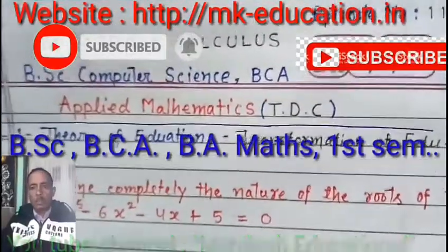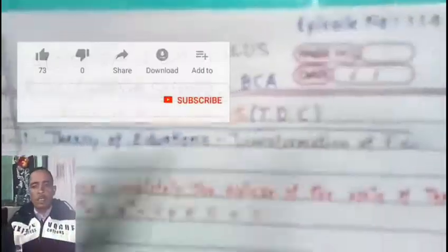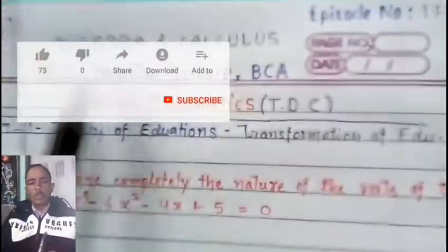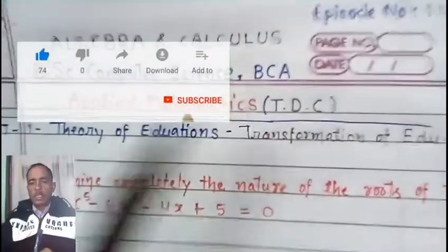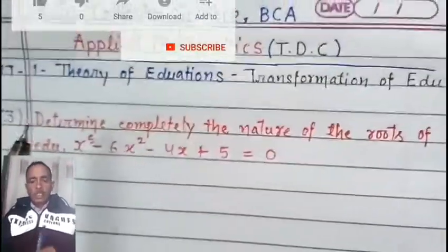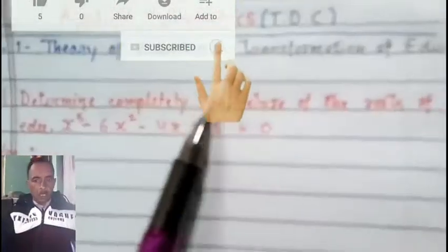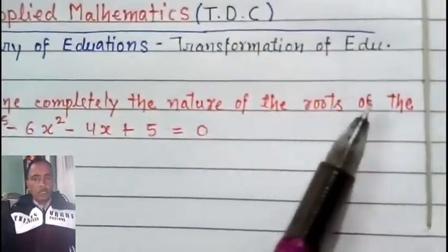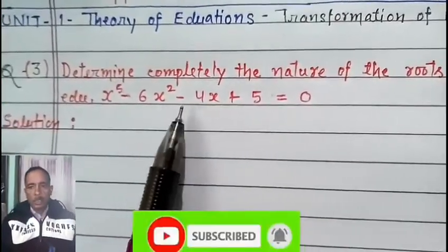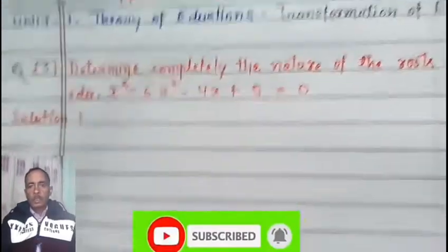Good morning dear students. This is episode number 114, covering Algebra and Calculus for BSc, Computer Science, and BCA semester 1, unit 1, theory of equations. Today's question, question number 3, is: determine completely the nature of the roots of the equation x to the power 5 minus 6x squared minus 4x plus 5 equal to 0.